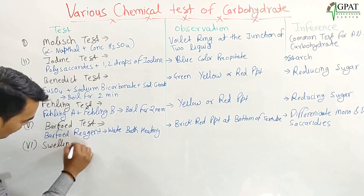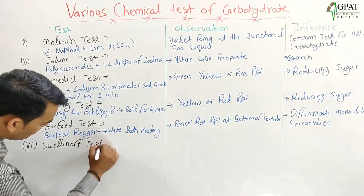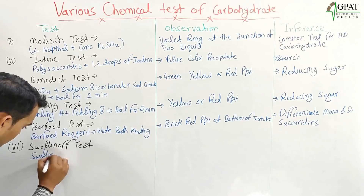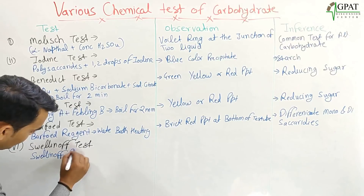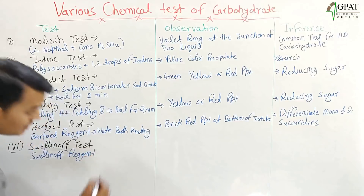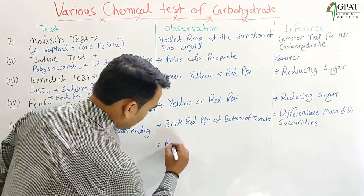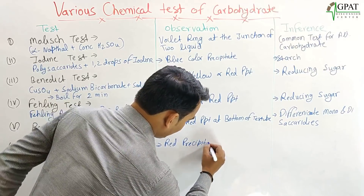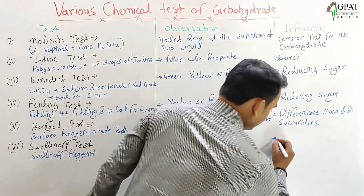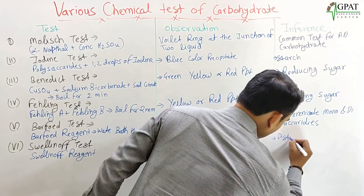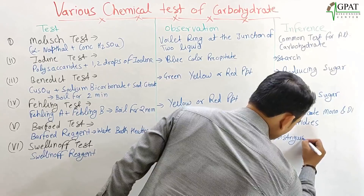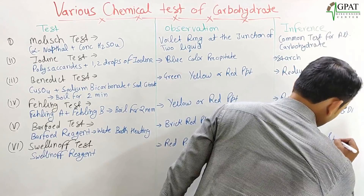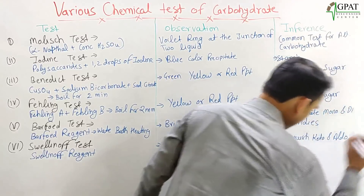The Seliwanoff test: we add Seliwanoff reagent to the sample. If a red precipitate forms, it distinguishes keto carbohydrates from aldo carbohydrates.